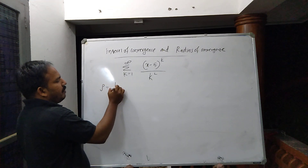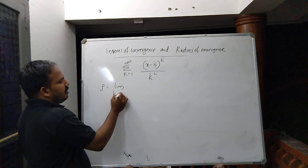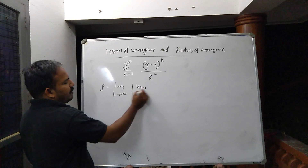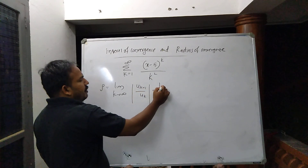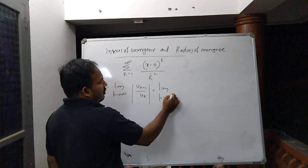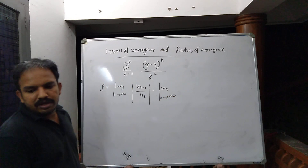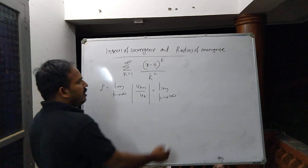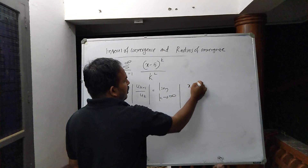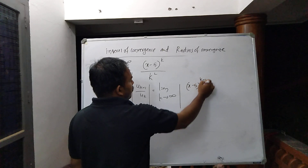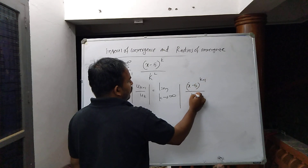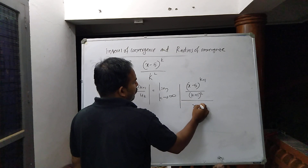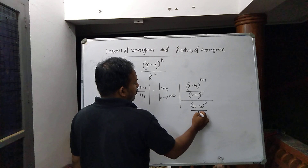We apply the ratio test: rho equals the limit as k tends to infinity of the absolute value of u_{k+1} divided by u_k. That gives us the limit as k tends to infinity of the absolute value of (x minus 5) to the power k plus 1, divided by (k plus 1) squared, all over (x minus 5) to the power k divided by k squared.